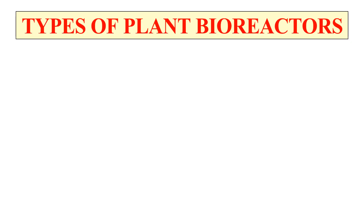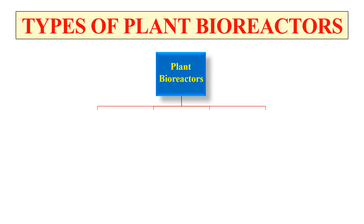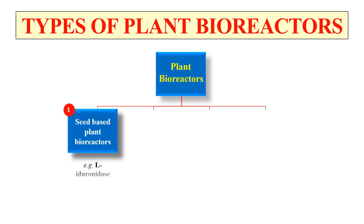Now, the types of plant bioreactors — this refers to which part of the plant the biological reaction is taking place, or in other words, in which part of the plant the product is forming. Generally there are four types of plant bioreactors on the basis of the part of the plant used for production. First: seed-based plant bioreactors, where the product is formed in the seeds of plants, so the seeds are acting as the bioreactor.